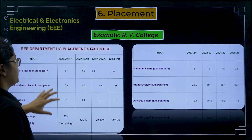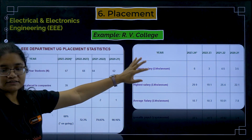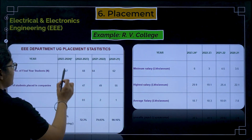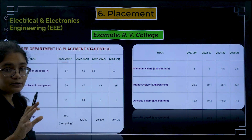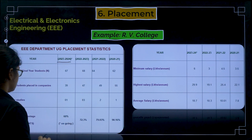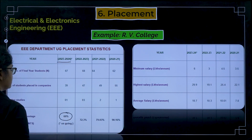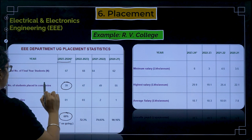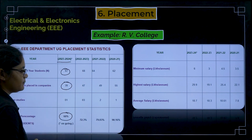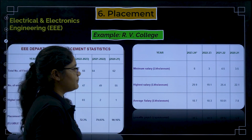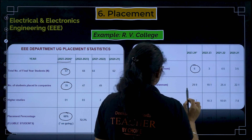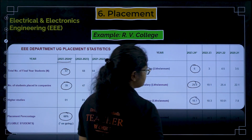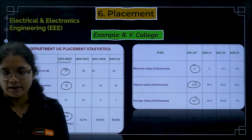Looking at placement data, I have taken RV College placements for the EEE branch. In 2023–2024, the placement percentage was 60%. The number of students placed was 39 out of a total of 67 students. Regarding packages, the minimum was 6 LPA, the highest was 29.9 LPA, and the average package was 10.7 LPA.